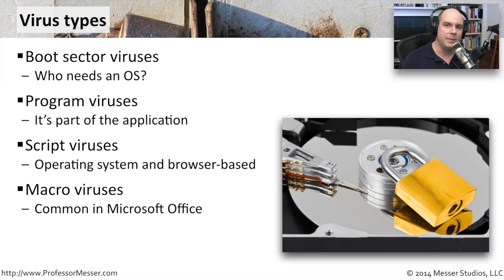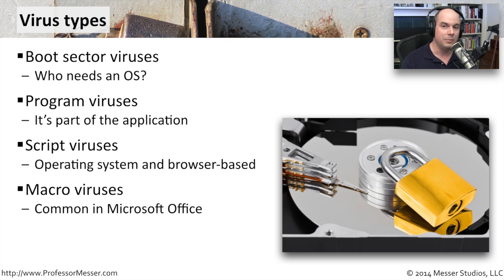Another very common type of virus, one that was enabled by functionality we added to our applications, is a macro virus. When Microsoft Office first started allowing macros — Word, Excel, all of the Microsoft Office applications — the bad guys began to find ways that those macros could take advantage of things outside of Office. So you could open a Word document or a spreadsheet, and the macro inside would then gain access to the operating system.